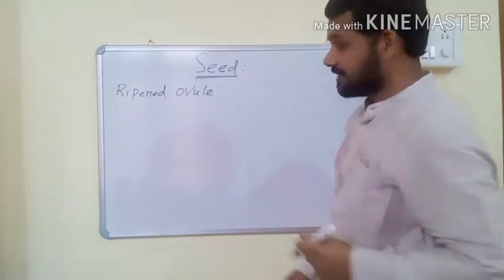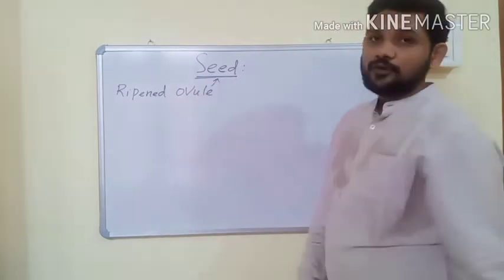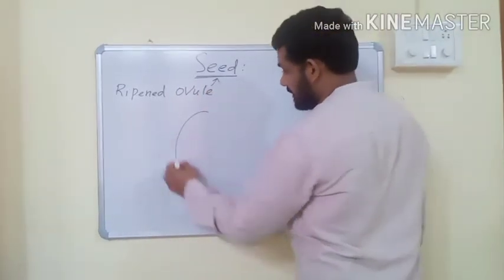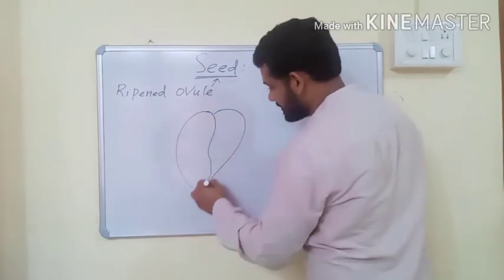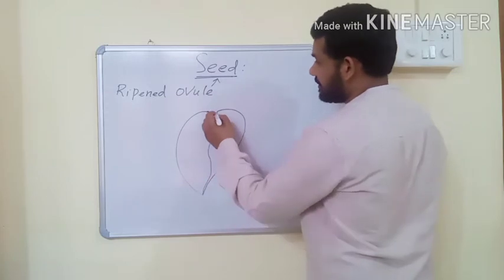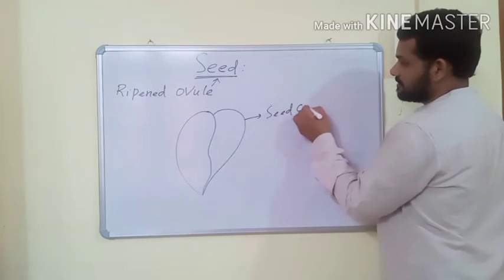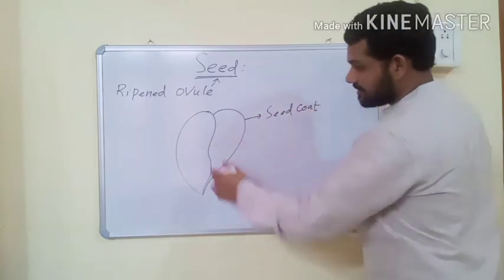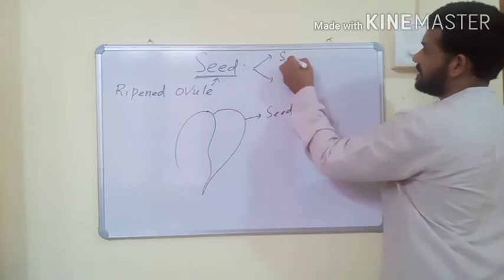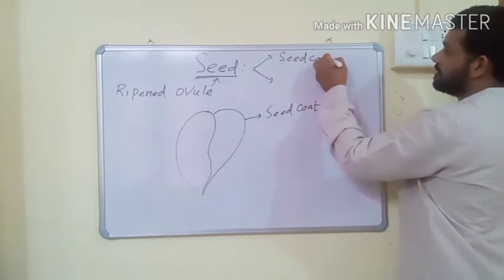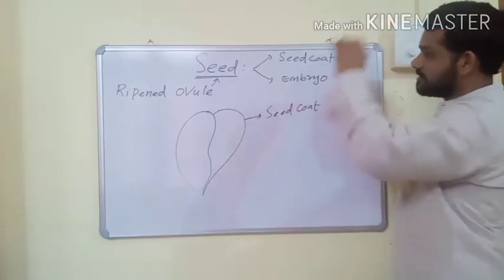After fertilization, the ovule is transferred into a seed. This seed has two parts: the outer part is known as the seed coat, and the inner part is the embryo. The seed coat has a scar known as the hilum. Below the scar, there is a small pore known as the micropyle. Micropyle helps in the exchange of oxygen and water needed for germination.